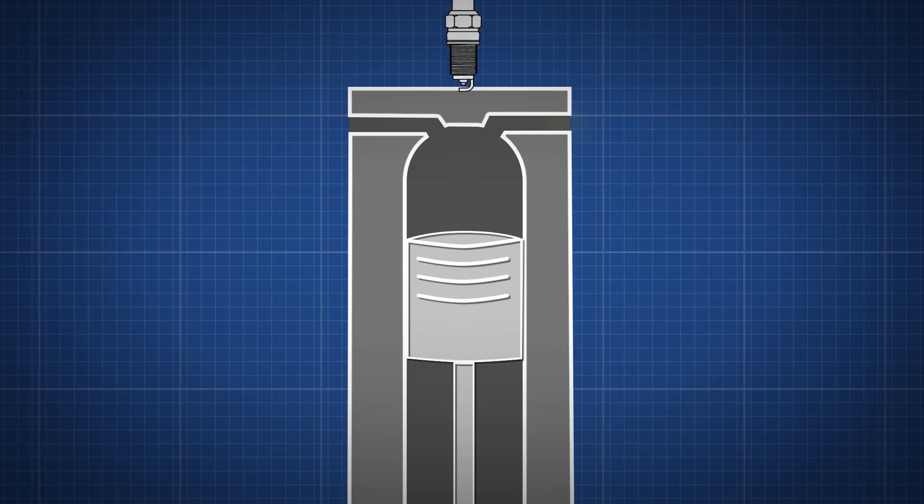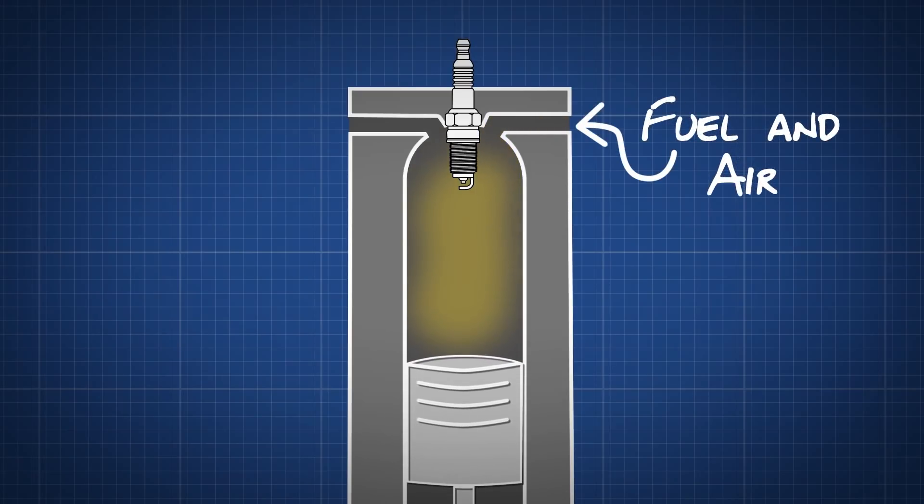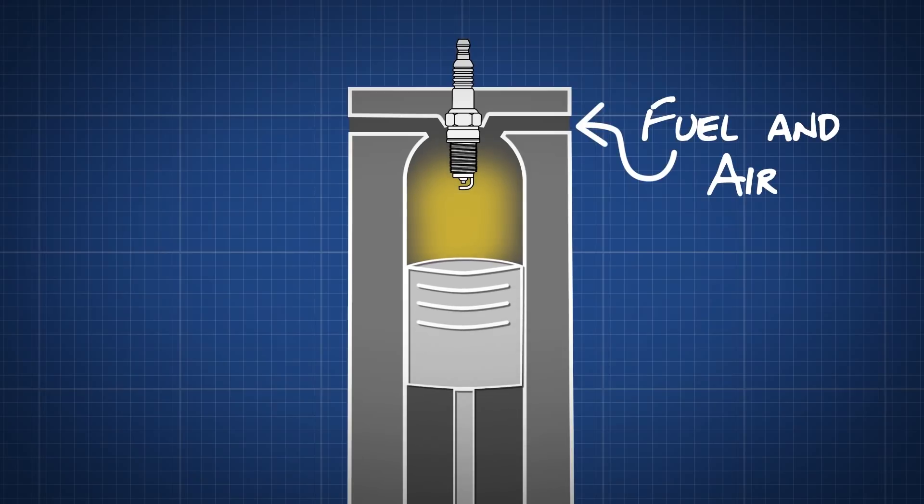The spark plug is located at the top of the cylinder head. The piston first travels down the cylinder, drawing in a mixture of fuel and air. The piston then goes back up towards the spark plug, compressing this mixture.